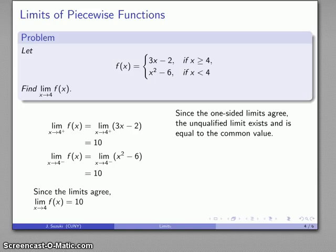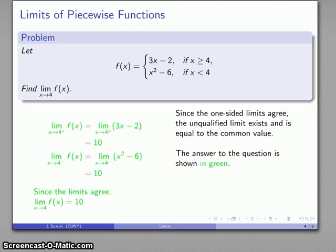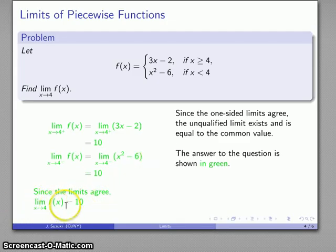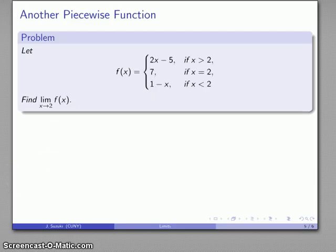As a note on syntax, the proper and complete answer to the question is the portion shown in green. We want to show the limit as x approaches 4 from above, the limit as x approaches 4 from below, and make the observation that the limits agree — so the unqualified limit (without plus or minus) is equal to the common value.